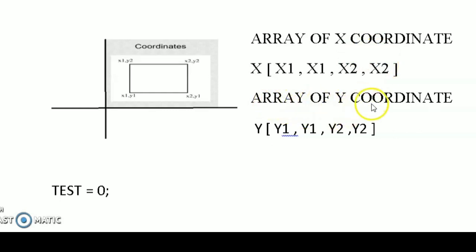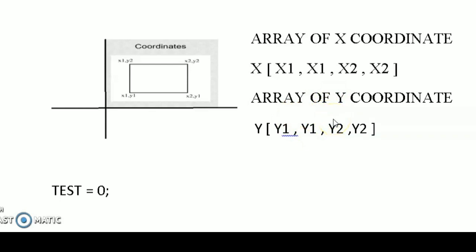Similarly we do with the y-coordinate array: 0 XOR y1 gives y1; y1 XOR y1 gives 0; 0 XOR y2 gives y2; and y2 XOR y2 gives 0. So what we observe here is: for any rectangle parallel to the coordinate axis, if we take XOR of all x-coordinates or all y-coordinates, we get output zero.